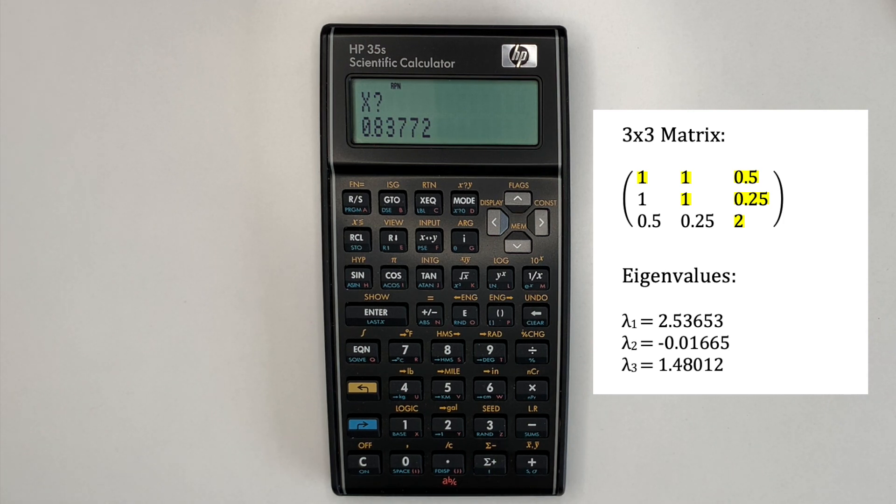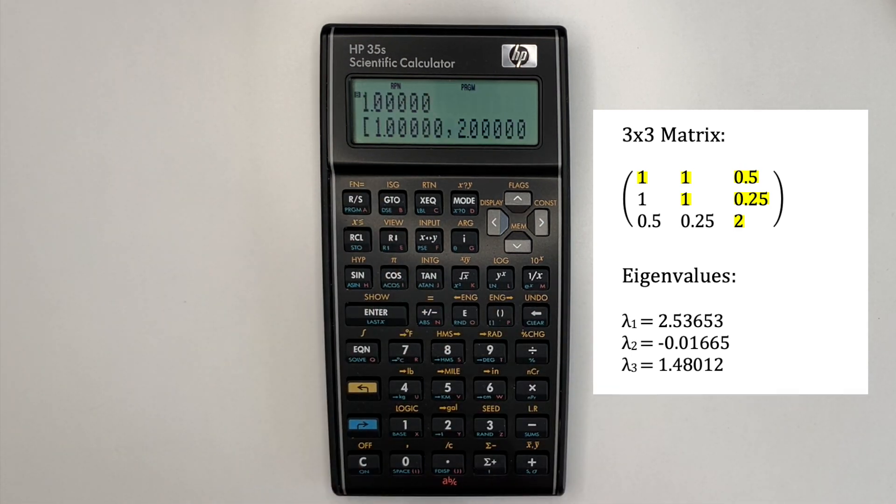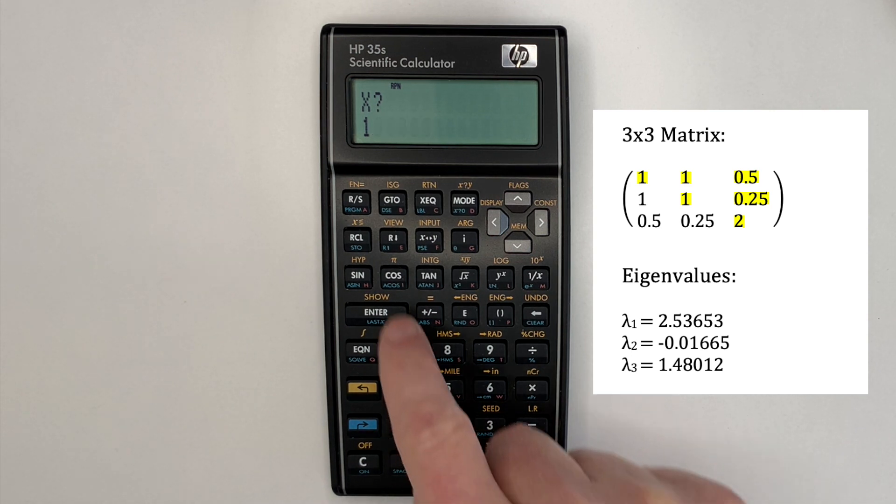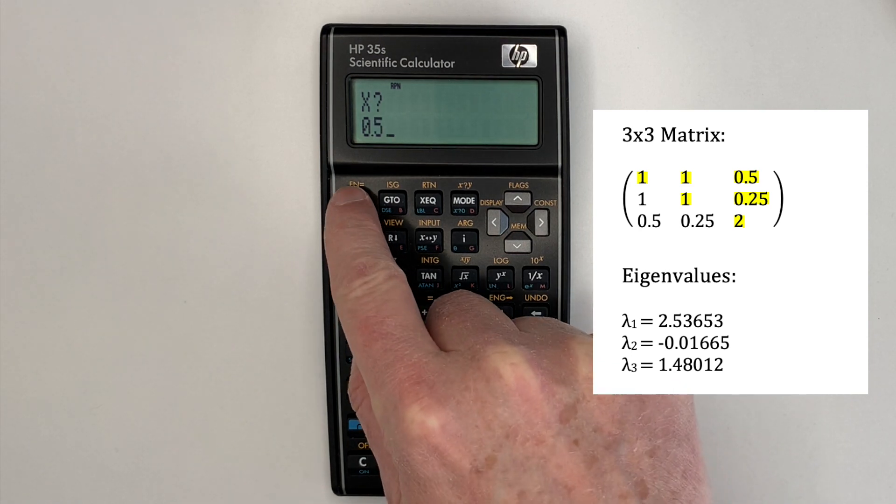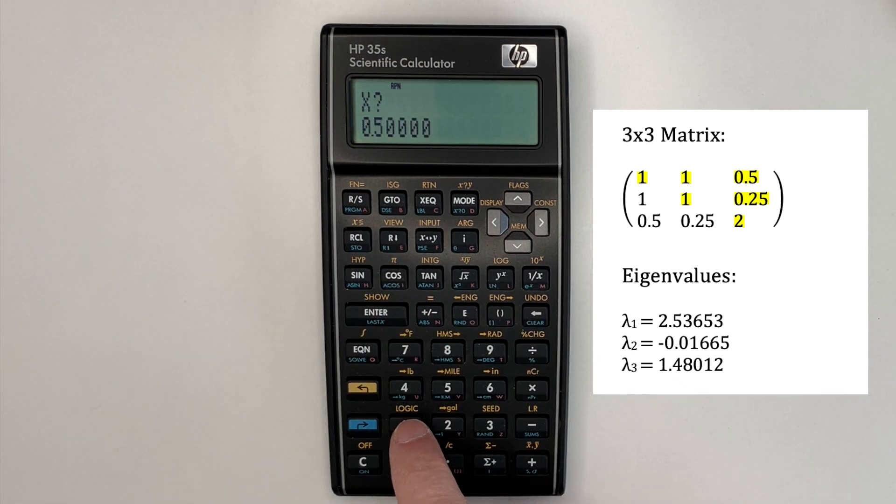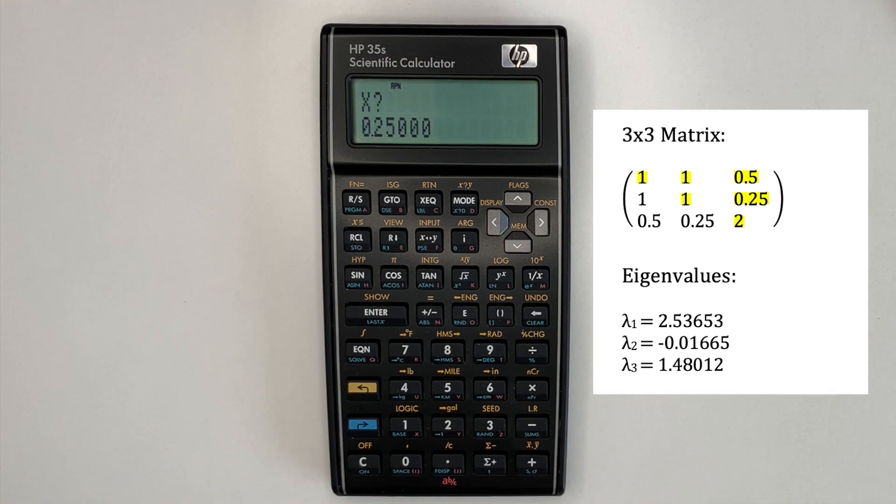Now you can see that it requests the elements of the matrix one by one and gives the row and column of each matrix element. So the first was 1,1, so it's 1, then 1,2 is 0.5, then 1,3 is 1, then 2,2 is 0.25. And now the final element, once that's entered, it will calculate the eigenvalues. So that's 2.